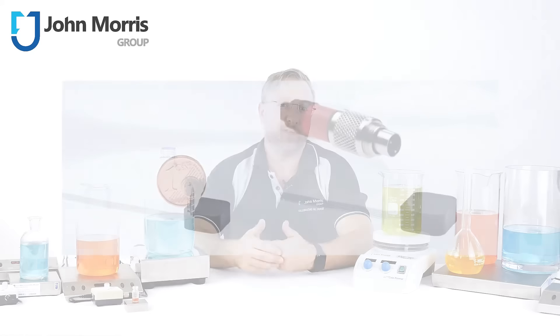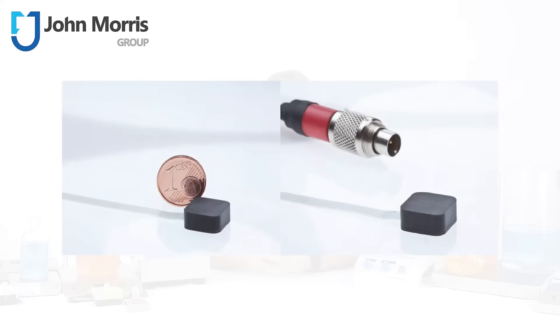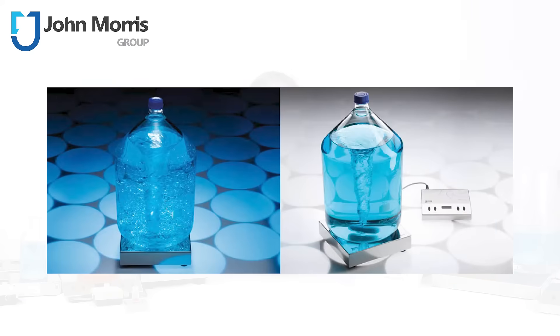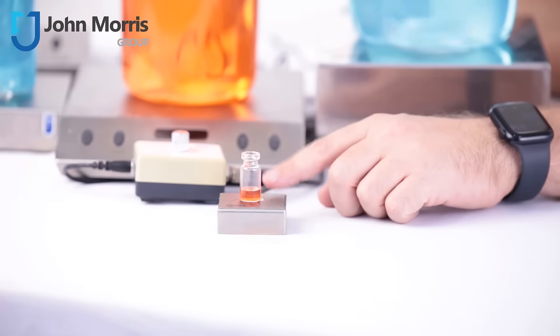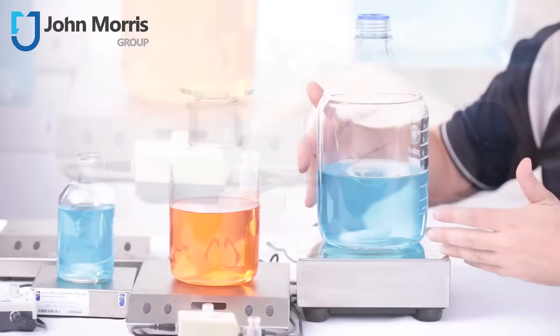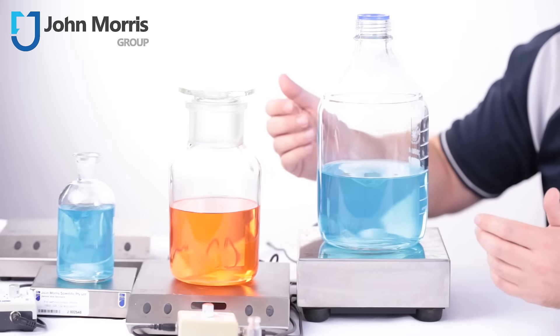Or you can have stirrers which are very small for OEM applications and super strong for industrial applications. For instance, this little beast over here is perfect for keeping fluids in a cuvette moving, whilst this big boy can stir up to one tonne of water.